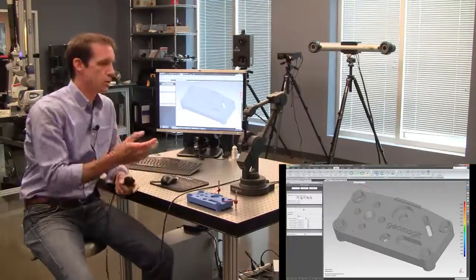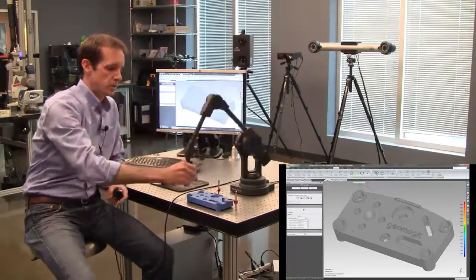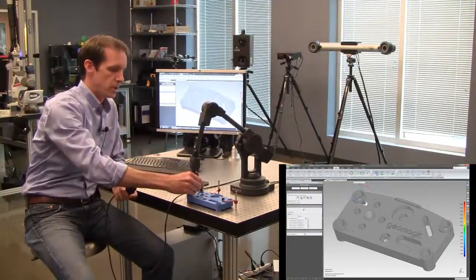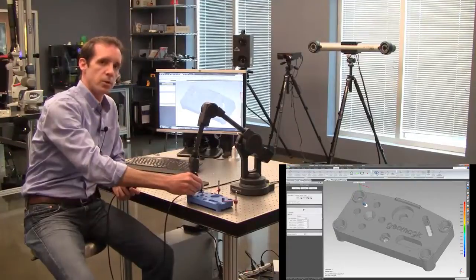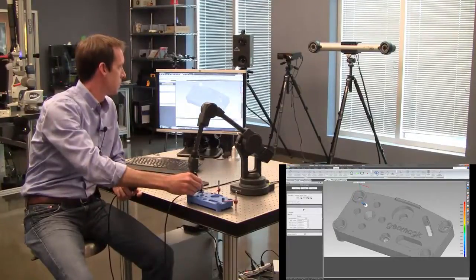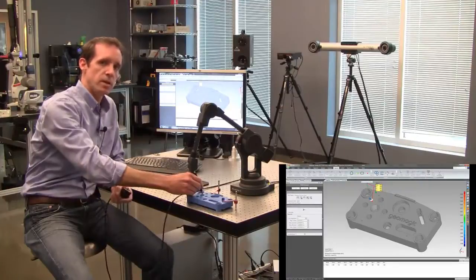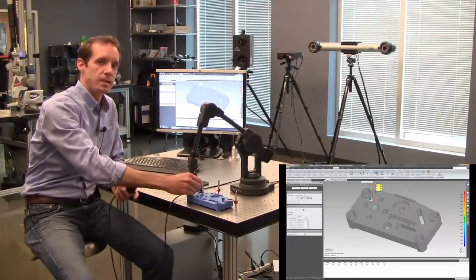So probe compare is a really quick, easy way to collect real-time measurements. So if I want to know the deviation at a certain point, place the probe tip on the part, click the button, it collects a point, reports back to me what the deviation is, and creates a little annotation.